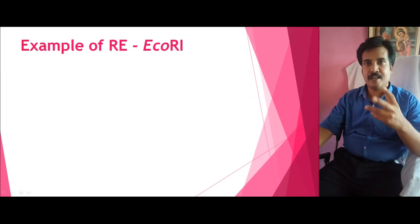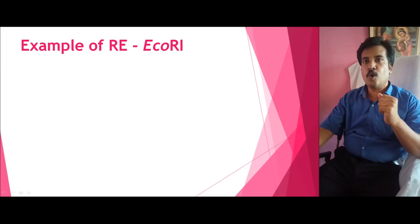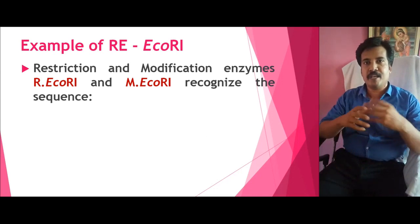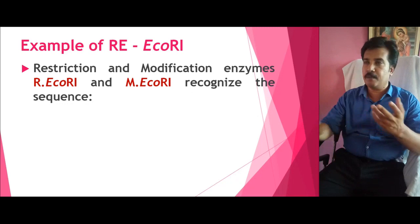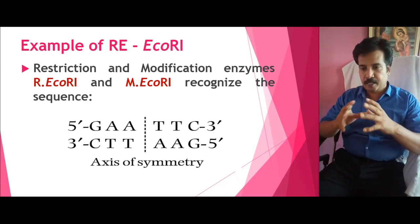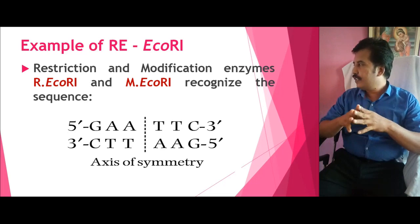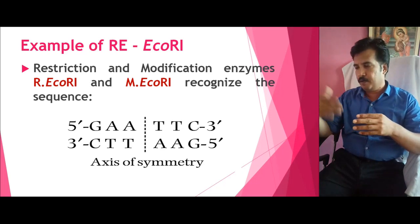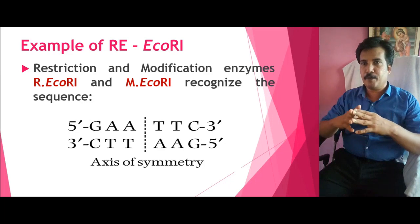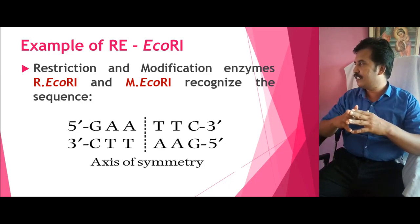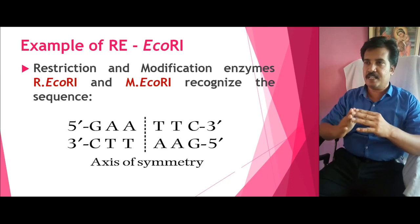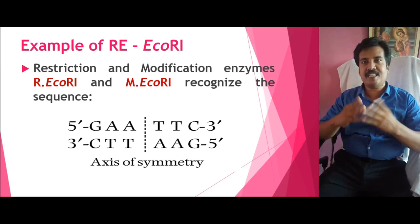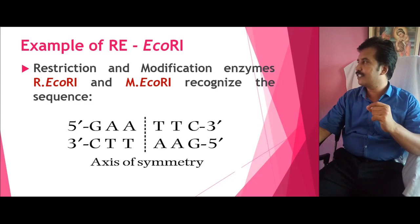For example, consider the restriction enzyme EcoRI. EcoRI can be present in two forms: either as restriction EcoRI or modification M.EcoRI. It cuts the sequence GAATTC — reading from 5' to 3' or from 3' to 5', this is a palindrome in nature. You can see that GAATTC reads the same from both directions. This is called the axis of symmetry, which precisely helps in identifying and restricting the sequence.